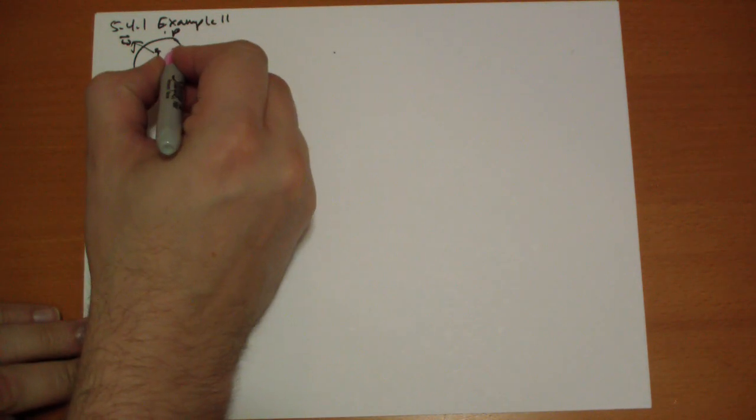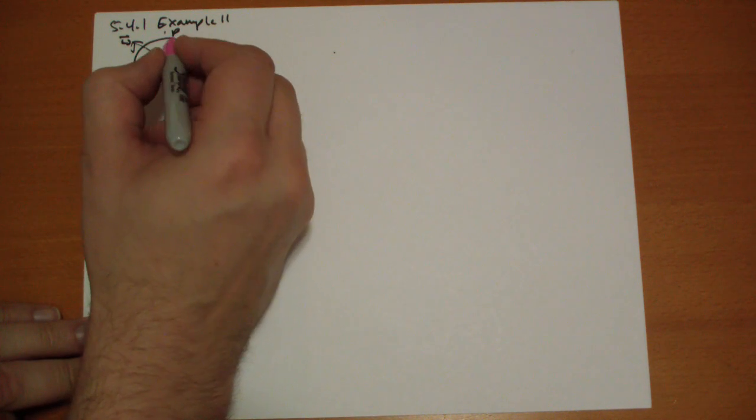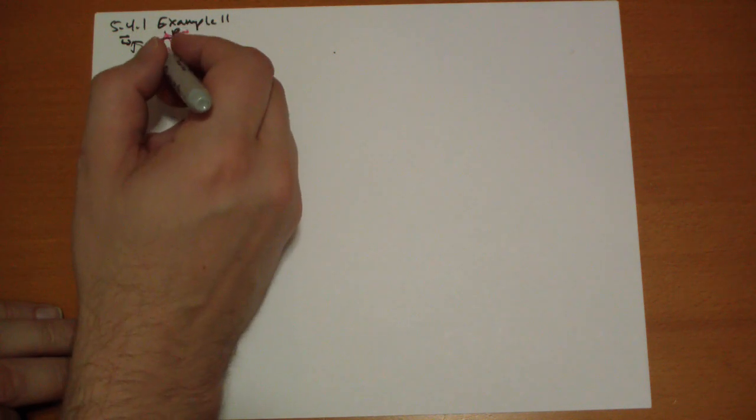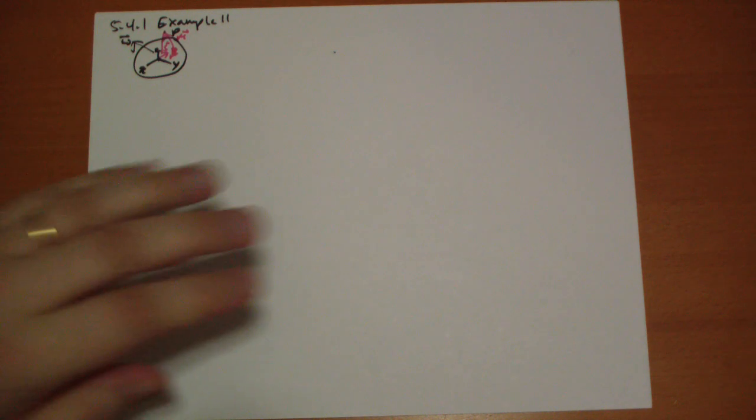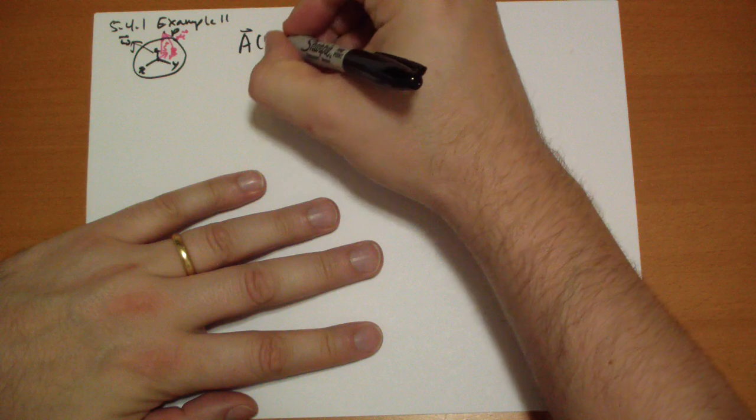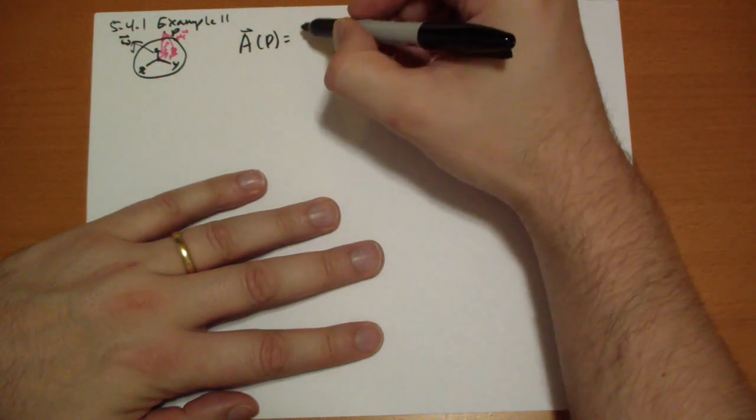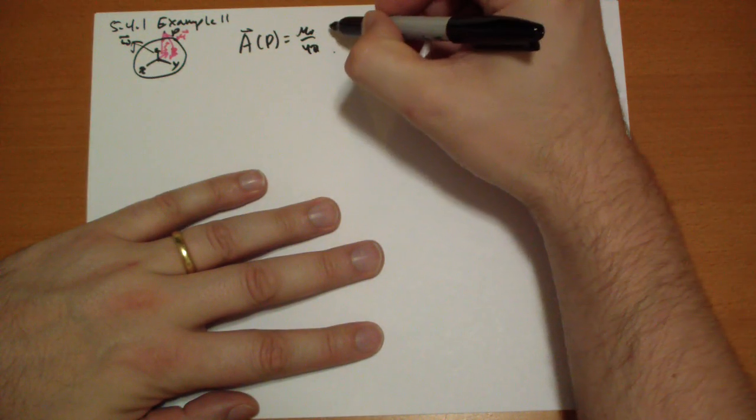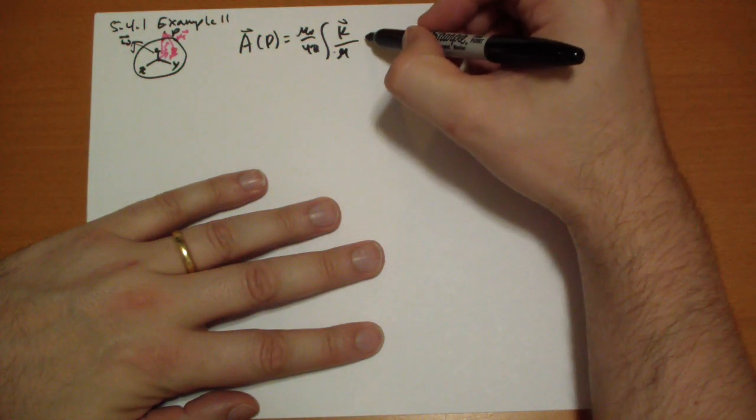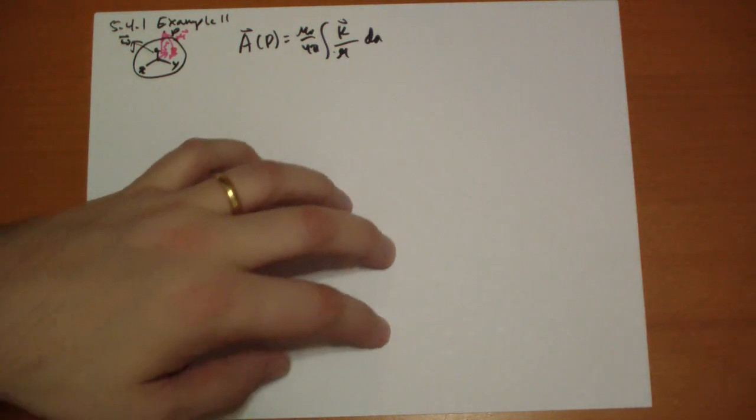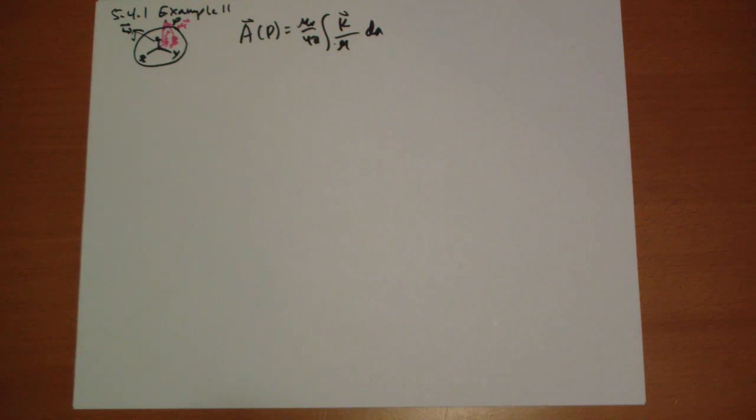Then we're going to integrate this surface area chunks that are vector R. And of course, R curly is the difference between them. And then we're going to use S as the distance of the point P above the Z-axis. Okay, so setting up our problem, we have our magnetic potential vector is equal to mu-naught over 4 pi integral of the K vector over R dA. That's the magnitude of R, not the vector R. You can't divide by vectors unless you're very special.